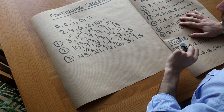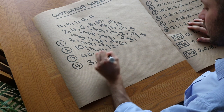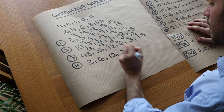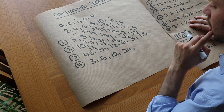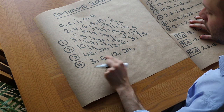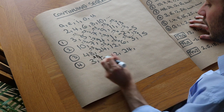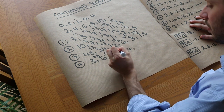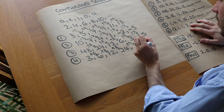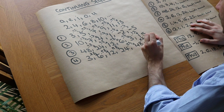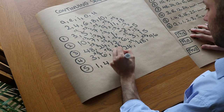The fourth sequence: 3, 6, 12, 24. We might think we're adding something, but we're adding 3, then 6, then 12 — the amount added is changing. Instead, we're multiplying by 2: 3 times 2 is 6, 6 times 2 is 12, 12 times 2 is 24. Doubling again gives 48, and doubling again gives 96.